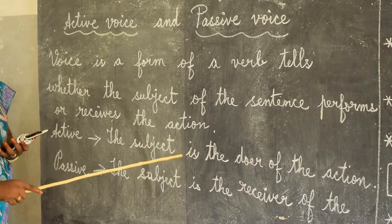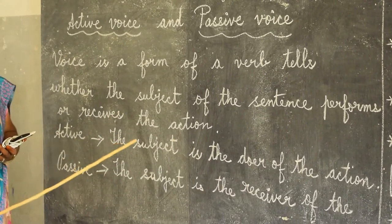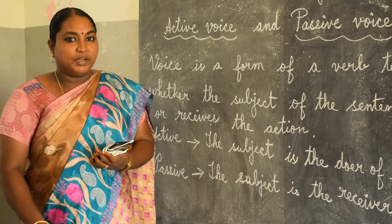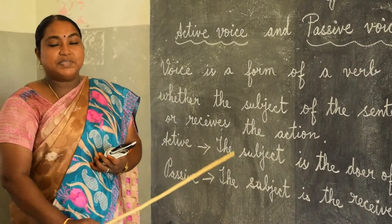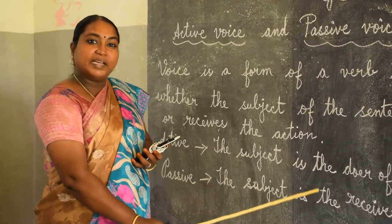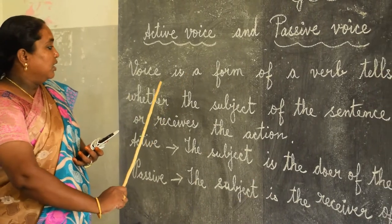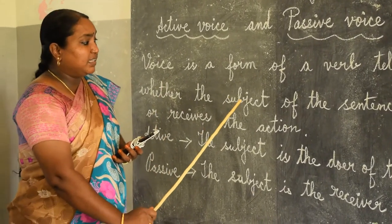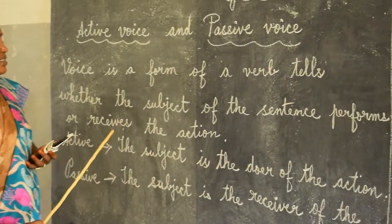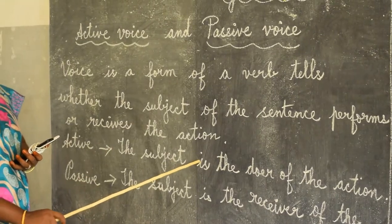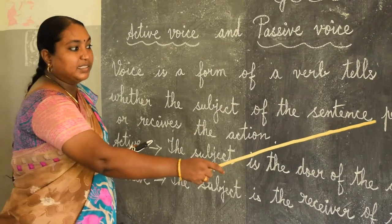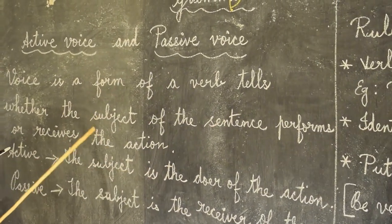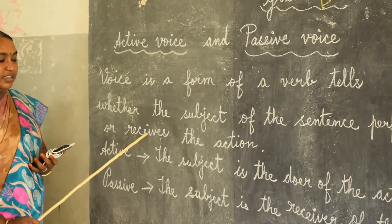We need subject and predicate. Subject is going to work. Minimum we need subject and verb to make a sentence. What does voice mean? It tells whether the subject is performing or receiving the action.